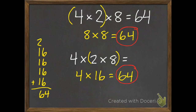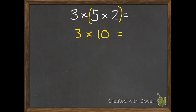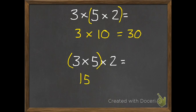Your second practice problem: 3 times 5 times 2. Go ahead and pause, and unpause when you're ready to check. I would group the last two because that gives us a 10, and 10s are always easy to multiply with. 3 times 10 equals 30. If you did it the other way, you would get 15 times 2, which is also pretty easy — just double 15 to get 30 again.